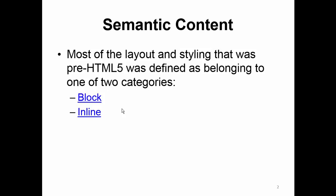Most of the layout and styling that was pre-HTML5 was defined as being in one of two categories: block and inline. If something is block, that means there'll be a blank line before it and after it — for instance, a P tag, a paragraph tag. Inline tags do not have anything before them, so it's like a bold tag, a B tag, a strong tag, an I tag, or an EM tag, etc.